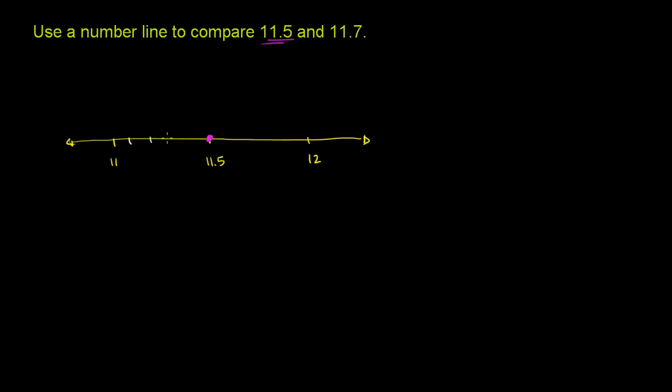So that's 1 tenth, 2 tenths, 3 tenths, 4 tenths, 5 tenths, 6 tenths, 7 tenths, 8 tenths, 9 tenths, and then 10 tenths right on the 12.